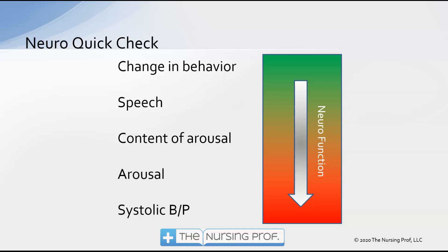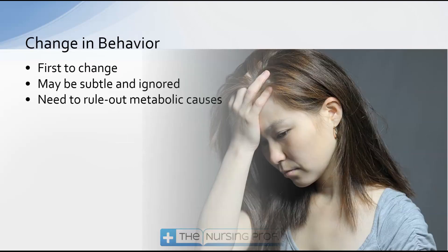As we go from top to bottom, we're going from our best neurologic function — the green part — down to the worst neurologic function, which is the red part. A change in behavior is the first thing that's going to change, though it may be subtle and may be ignored.